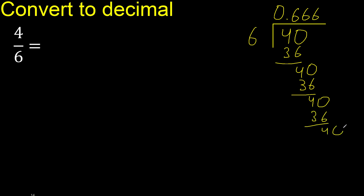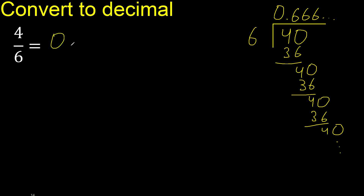The subtraction gives the same result, so this repeats. Since it repeats, we place a repeat sign. After the point, 6 repeats. The answer is 0.6 repeating.